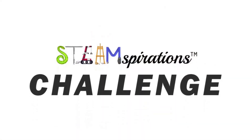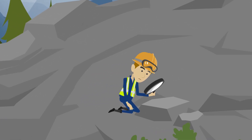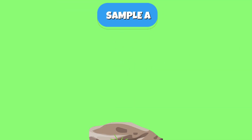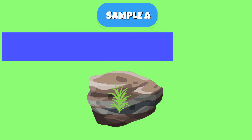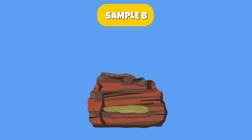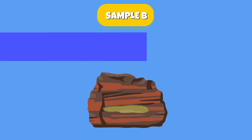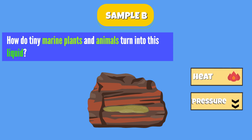Now let's put your knowledge to the test. Imagine you're a scientist examining samples from different stages of fossil fuel formation. Sample A: a shiny black rock with visible plant material layered within. Guiding question — what role does heat and pressure play in transforming plant material into this rock? Think about how these conditions change the material. Sample B: a dark, thick liquid found between sedimentary rock layers. Guiding question — how do tiny marine plants and animals turn into this liquid? Consider the effects of heat, pressure, and the conditions deep underground.